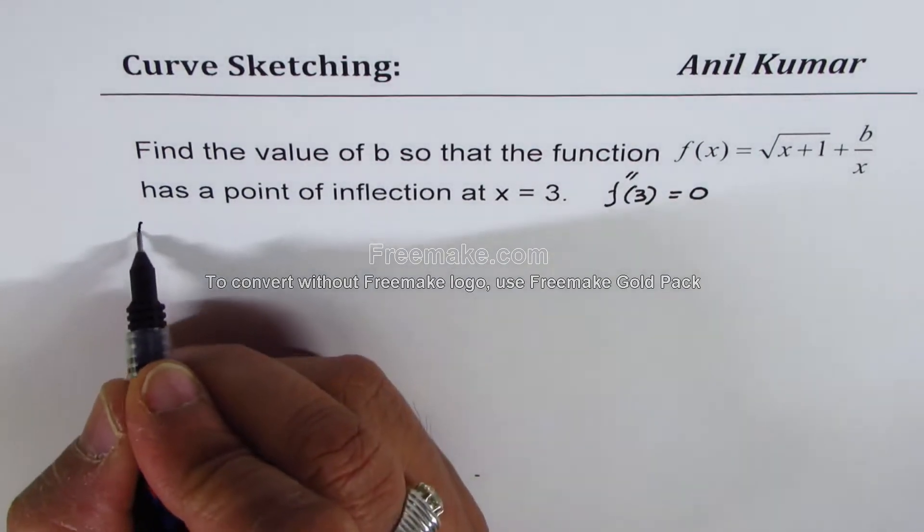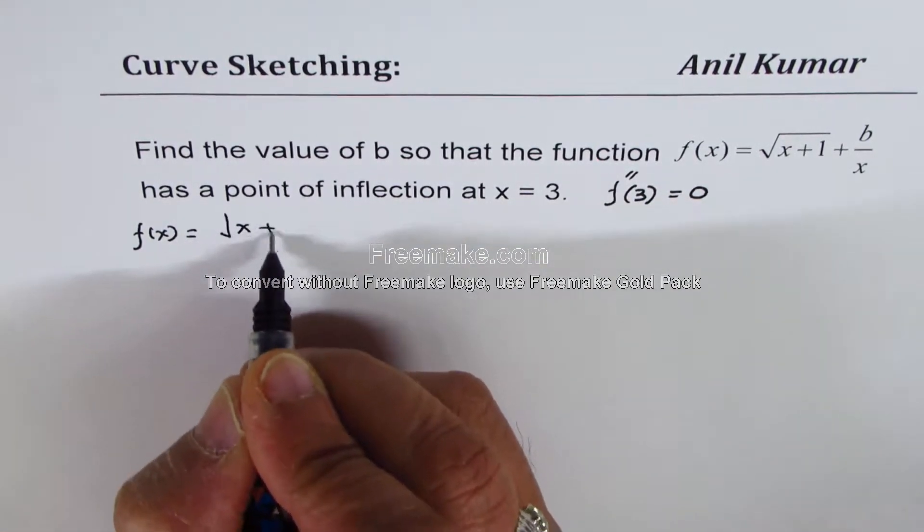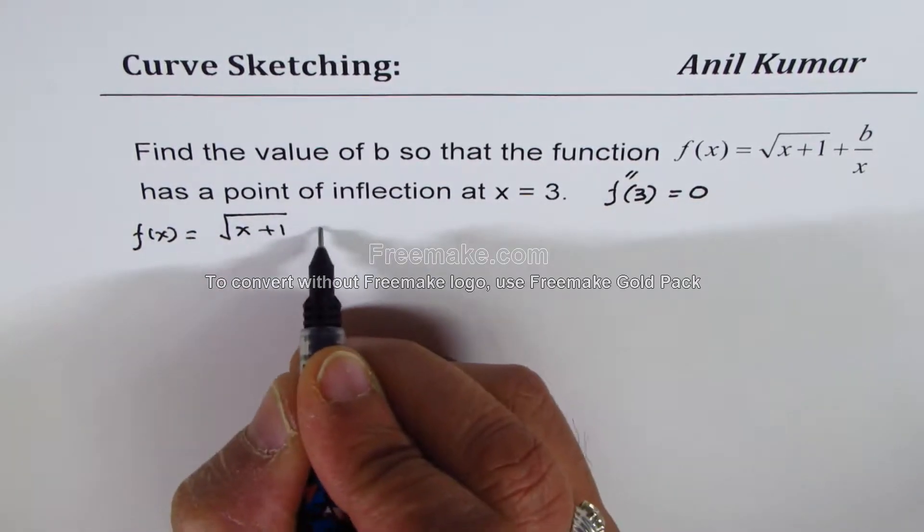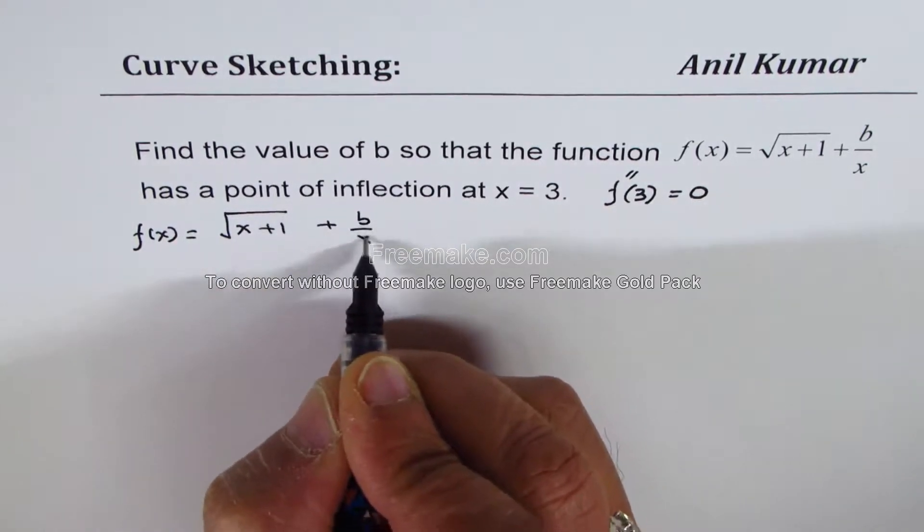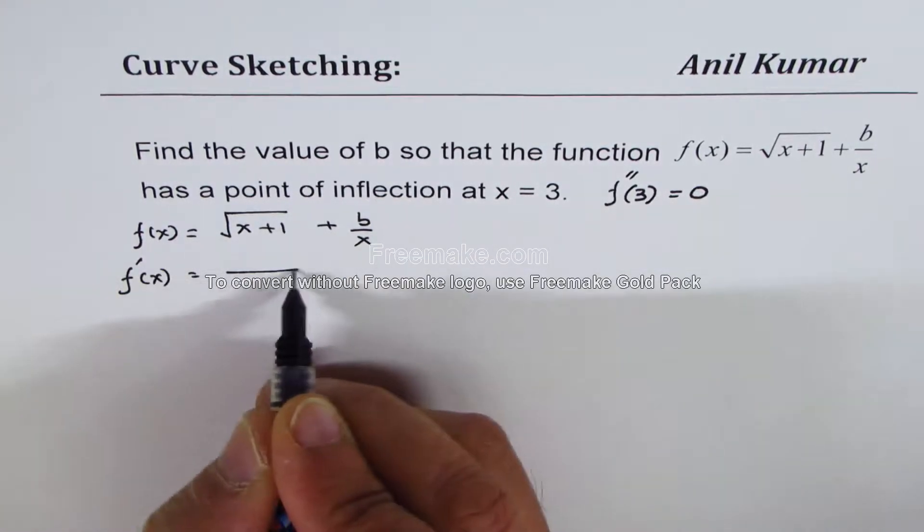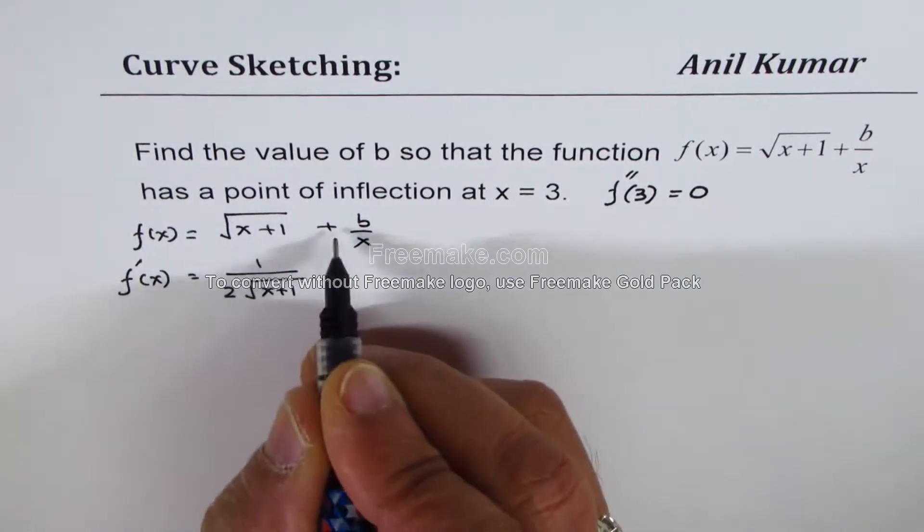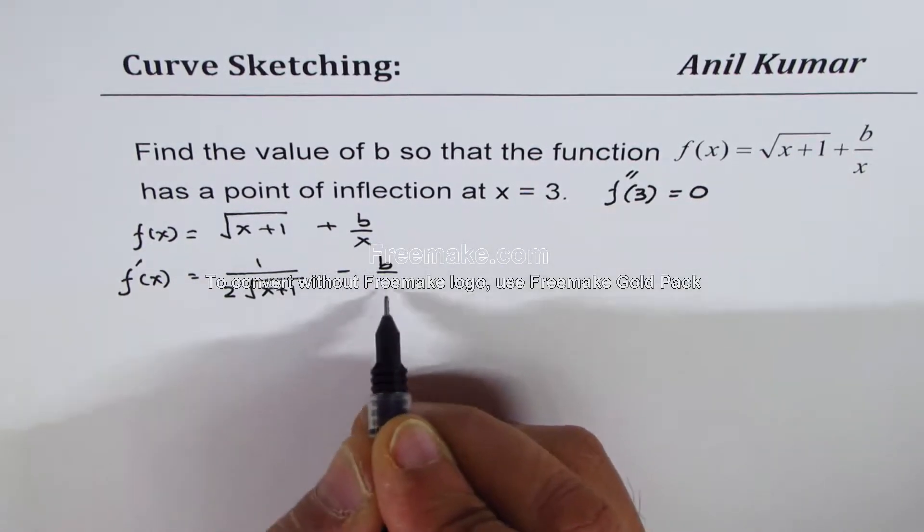Let's begin with the function itself: f(x) equals square root of x plus 1 plus b over x. For the first derivative, we get 1 over 2 square root of x plus 1, and here it would be minus b over x squared.